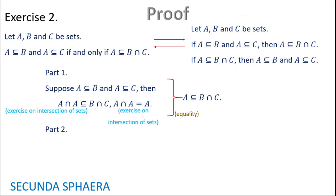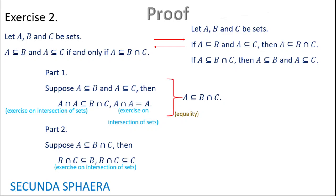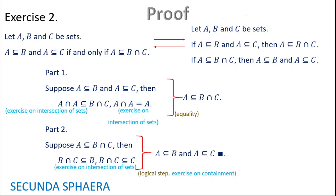For the second part, suppose that A is contained in B∩C. Exercises done on intersection of sets give that B∩C is contained in B, and that B∩C is contained in C. By an exercise on containment, it follows that A is contained in B, and also that A is contained in C. By the logic step of conjunction, we can combine those two results. That concludes the second exercise.